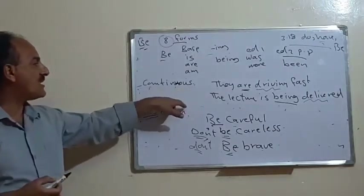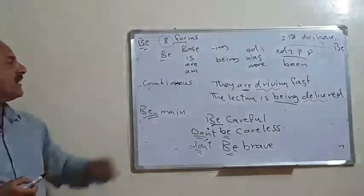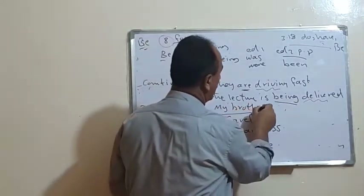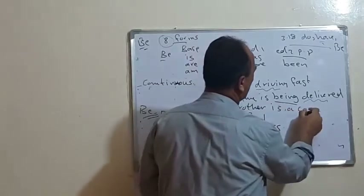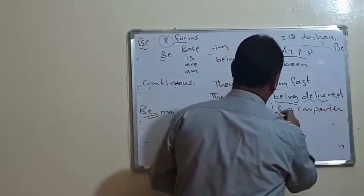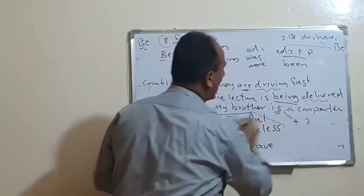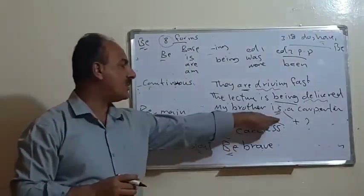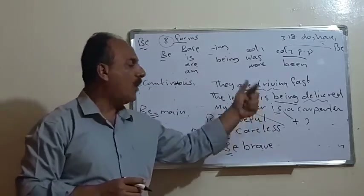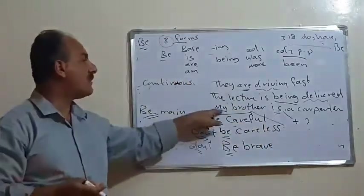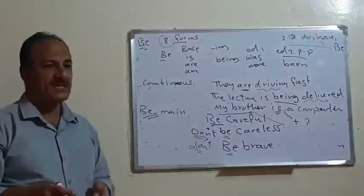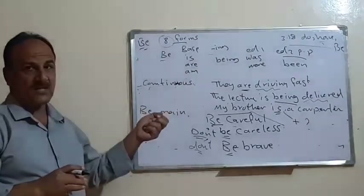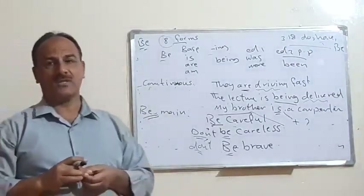'Be' can also be used alone as the only verb in a sentence. For example, 'my brother is a carpenter' — here 'is' is used without any addition. We can change it to past: 'my brother was a carpenter,' or to future: 'my brother will be a carpenter.' These are the main cases in which we use the verb 'be.' I hope the lecture is clear and easy — for any questions, I'm ready to answer.